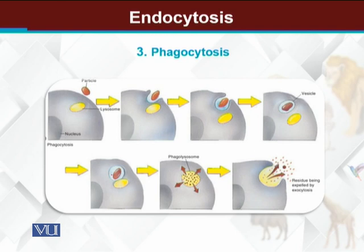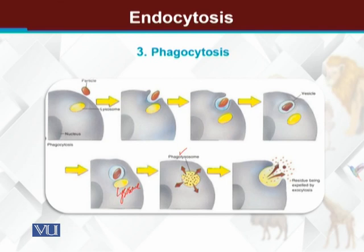بعد میں یہ vesicle lysosome کے ساتھ fuse یا merge کرے گا۔ Lysosome اور solid food intake — ان دونوں کے ملنے سے phagosome بنتا ہے۔ Phagosome میں جو useful material ہے وہ absorb کیا جاتا ہے جبکہ جو useless material ہے اس کو cell سے باہر نکال دیا جاتا ہے۔